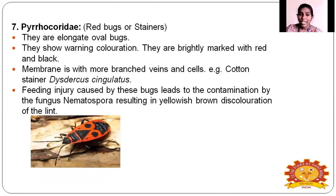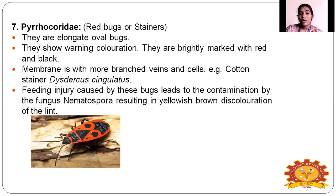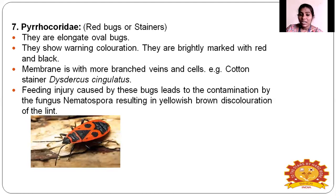Pyrocoridae — the red bug or cotton stainer. The body is oval-shaped. They show a warning coloration — bright red and black markings. The membrane has many branched veins and cells. Example: cotton stainer, Dysdercus cingulatus. The injury caused by feeding leads to contamination by the fungus Nematosporium, resulting in yellowish-brown discoloration of the cotton lint.